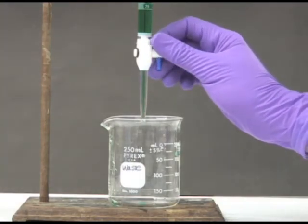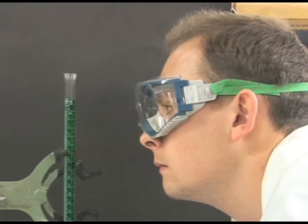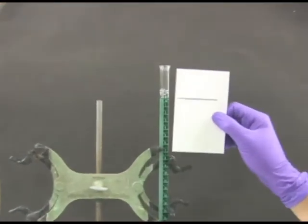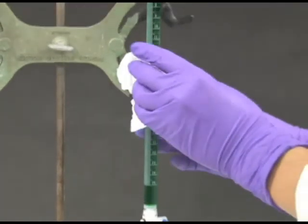Turn the stopcock to drain the burett until the solution is at the 0.00 line using a white card with a black line to read the burett. Always read the burett at eye level for an accurate read. Make sure no solution drains down the side of the burett.